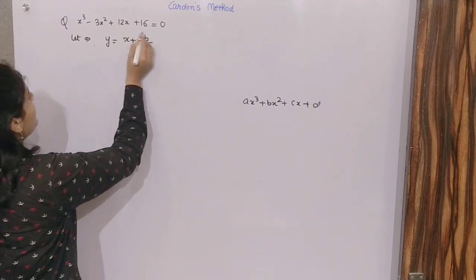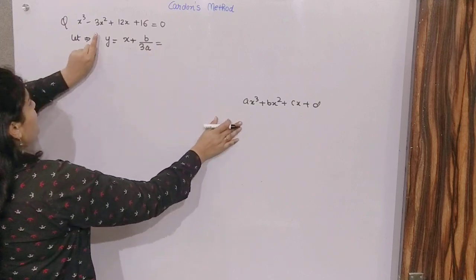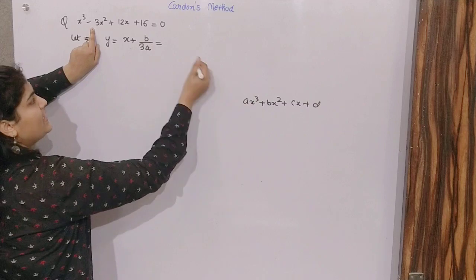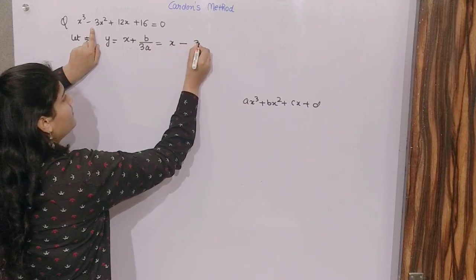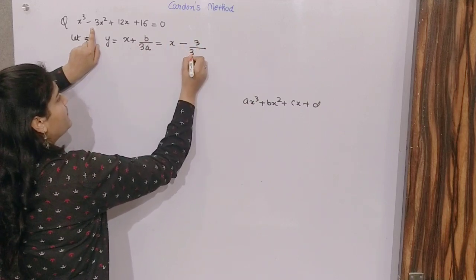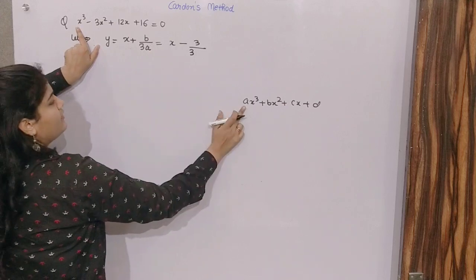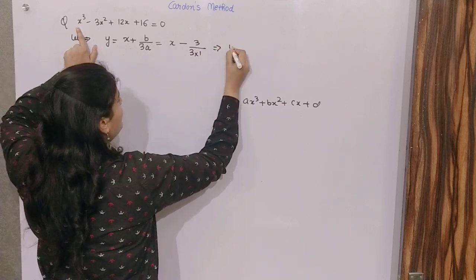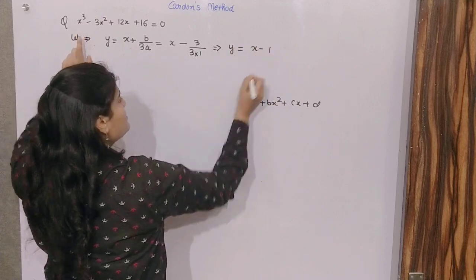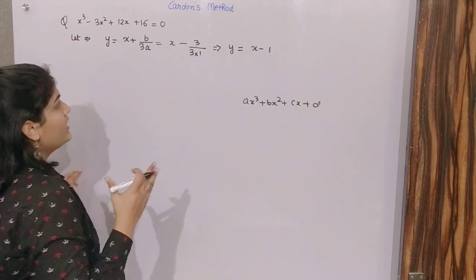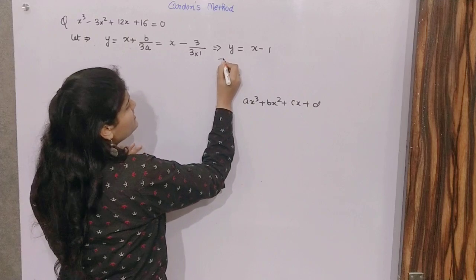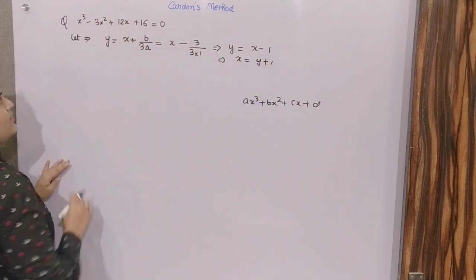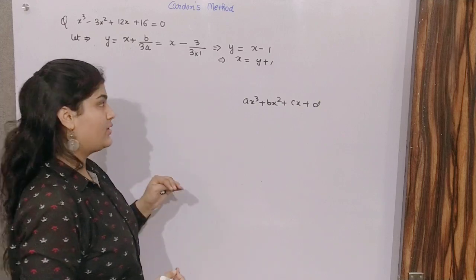So now, what is b here? If you compare, b is minus 3. So minus 3 by 3, and a is the coefficient of x cube, that is 1. So this becomes y equals x minus 1. Now because y equals x minus 1, that means x equals y plus 1, so substitute this value into your main equation.